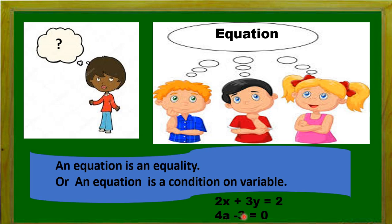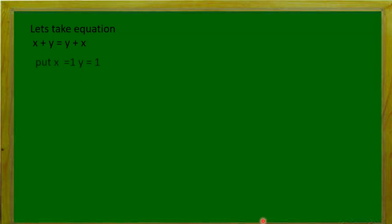For 4a − 3 = 0, for a particular value of a, the left hand side becomes 0. So that particular value of a is known as the solution of the equation, for which both sides of the equation are equal.